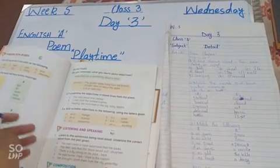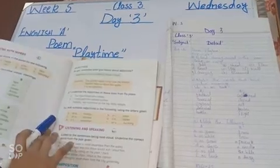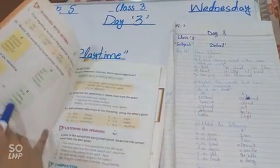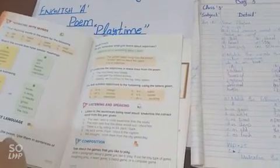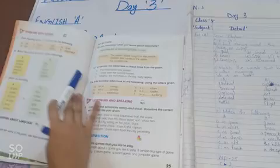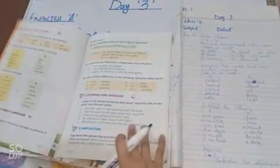Assalamu alaikum, Class 3. Today we are starting our Day 3 with subject English A. We are doing poem Playtime, and today we are going to do the workbook page of Playtime, page number 24. Find rhyming words in the poem for the following. You have to find the words in your copy this way.